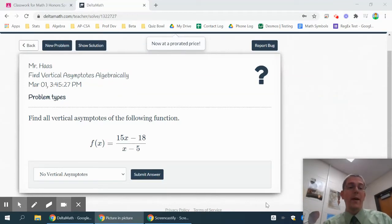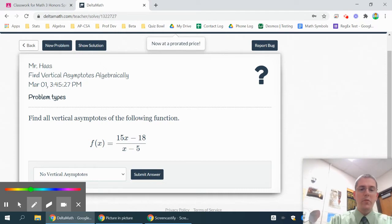Okay, we're going to review a few things about finding vertical asymptotes. Vertical asymptotes are caused by things that make the denominator equal zero.